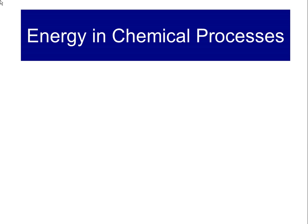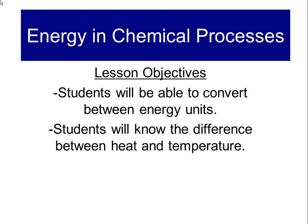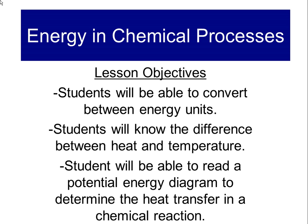This video is on energy and chemical processes. If you go to the table of contents, you can click on the link for this page, and it will bring up this PowerPoint with blank spaces so you can fill in the notes as we go. Your objectives are to: one, be able to convert between energy units; two, know the difference between heat and temperature; and lastly, be able to read a potential energy diagram and determine the heat transfer within a chemical reaction.